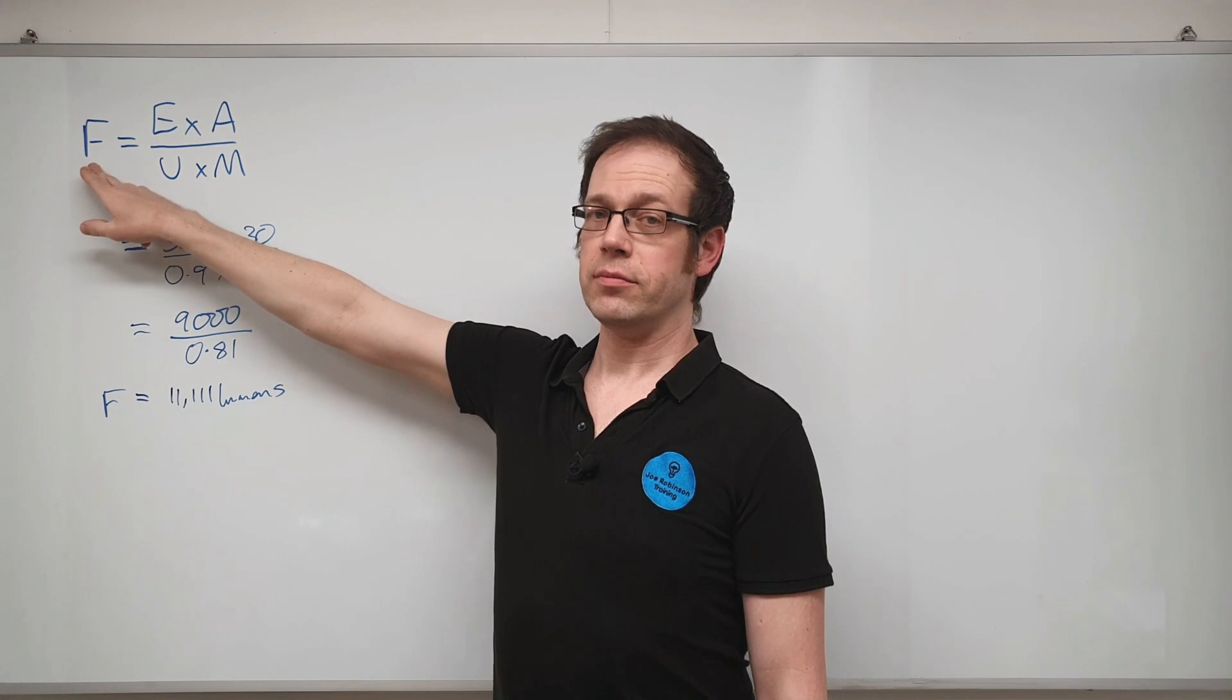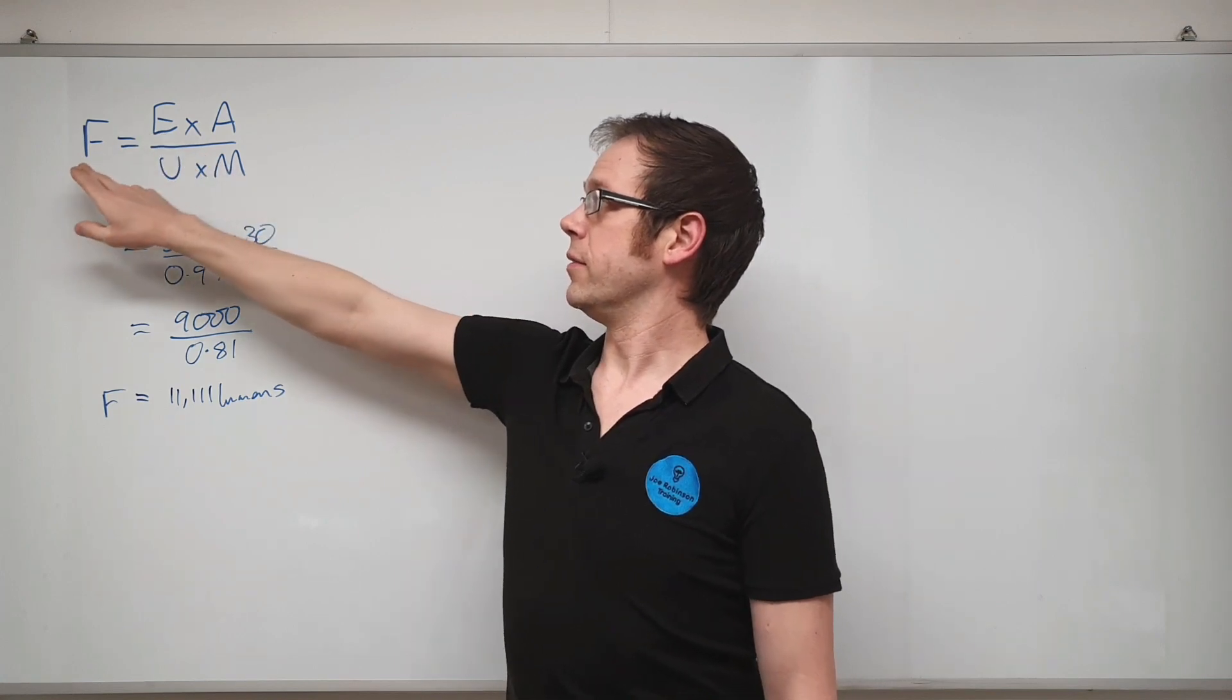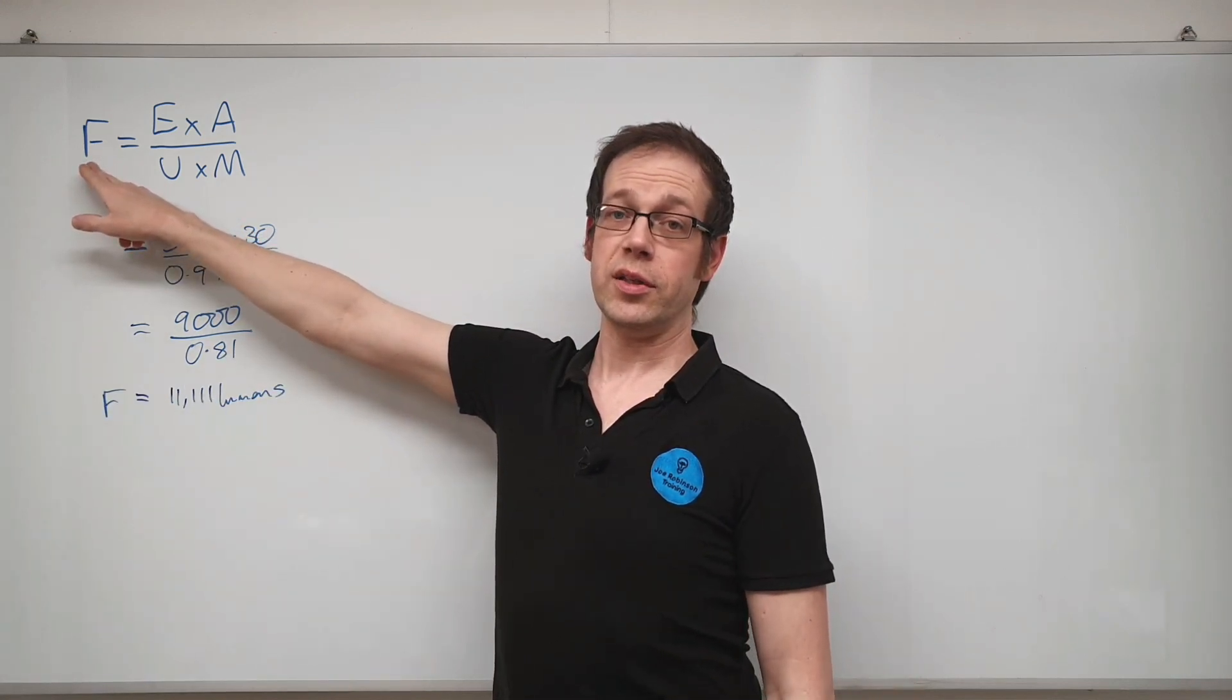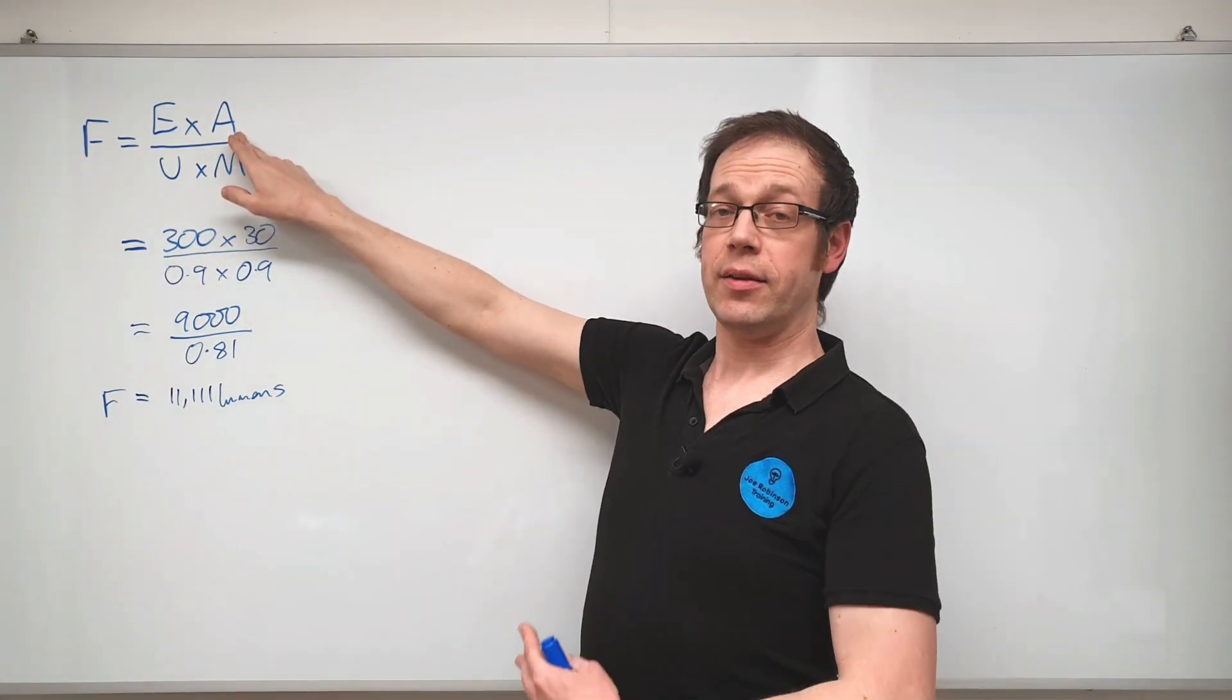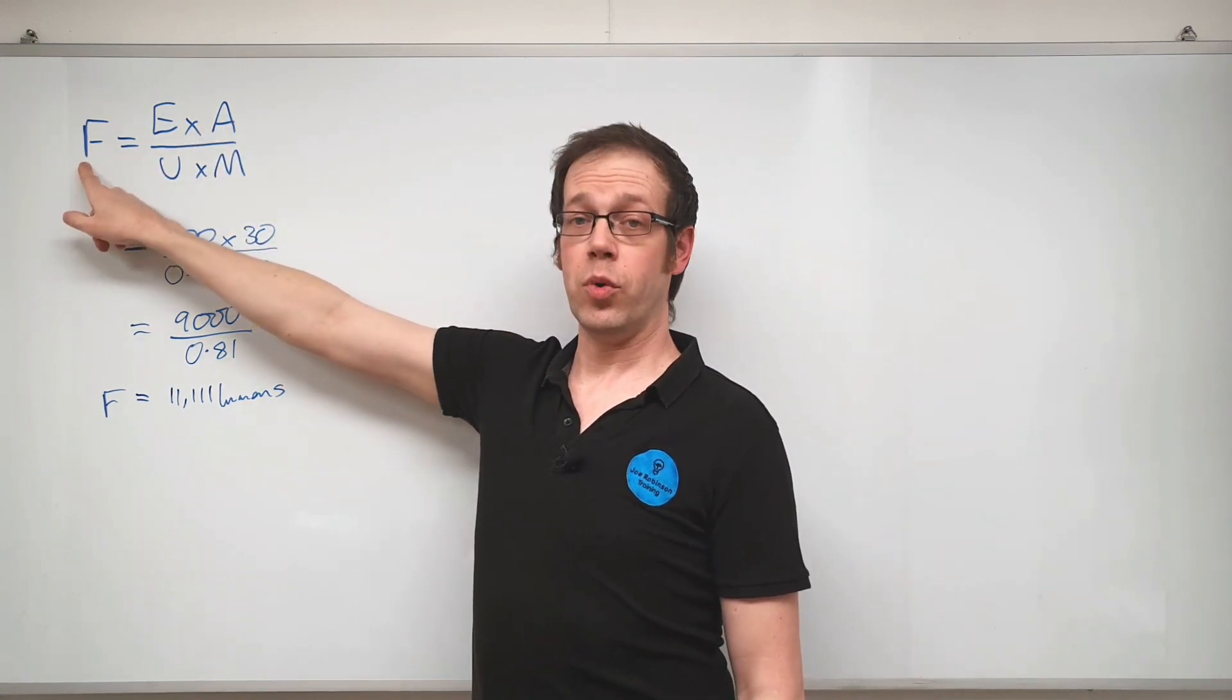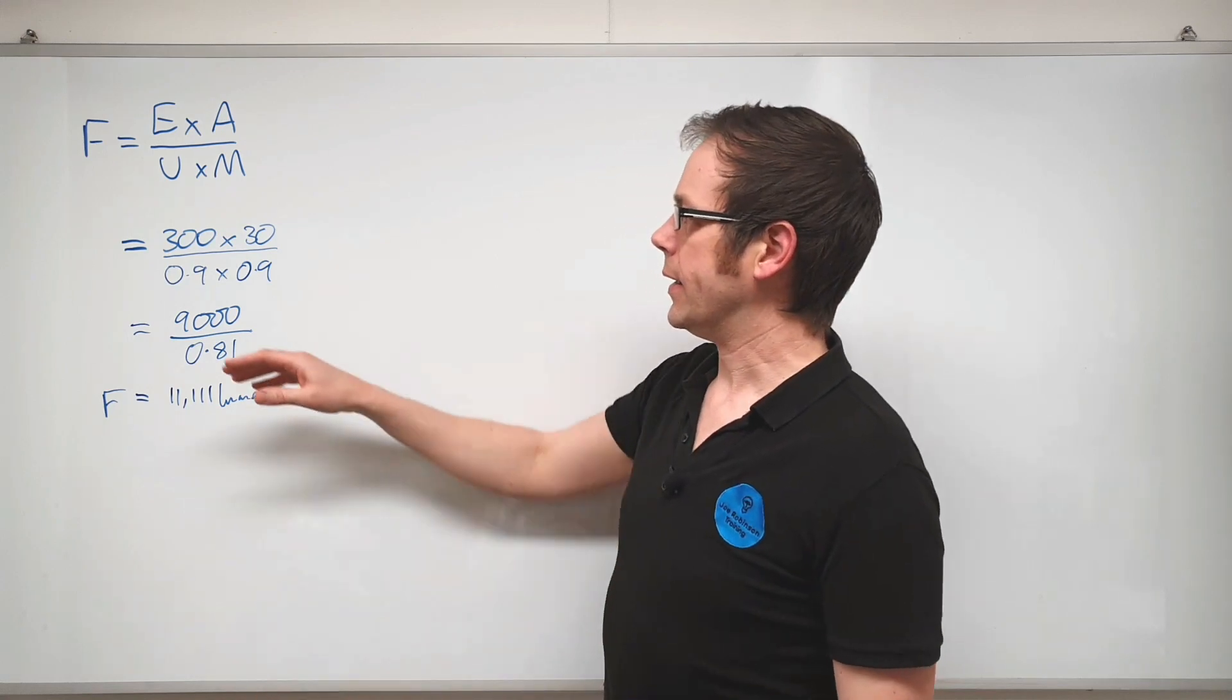If we make this number bigger, what's going to happen to this number? If we make E bigger, what happens here? Well because this is on the top of the calculation, on top of the division, if we make this number bigger, this number gets bigger—which makes sense, doesn't it? If we want the surface to be more brightly lit, then we need to increase the amount of light output that the light sources have. Again, if we make this number bigger, if we make the room area bigger, then we're going to increase this number here, which means that again increasing the area means that we need more lumens.